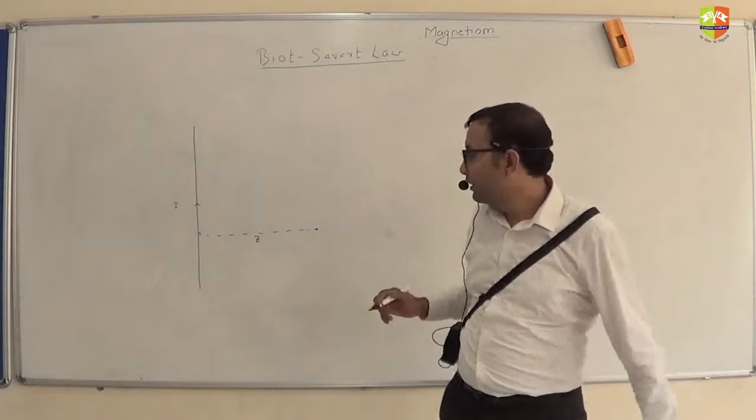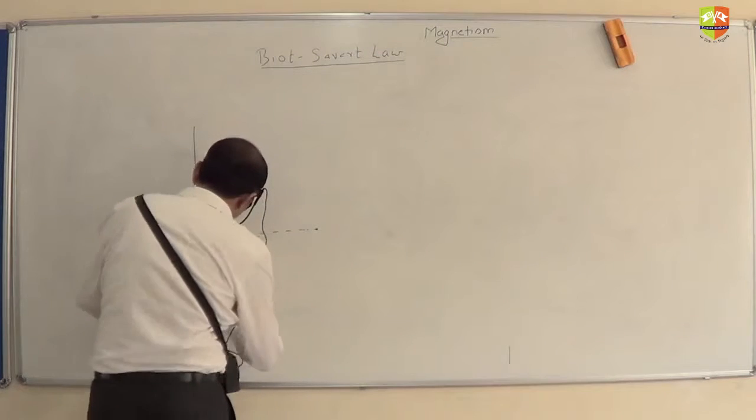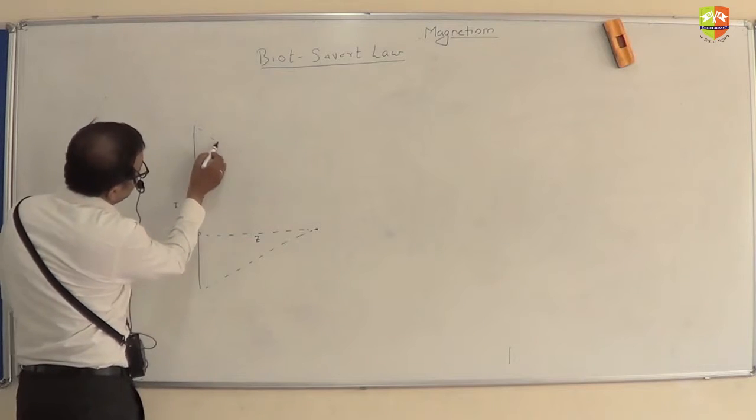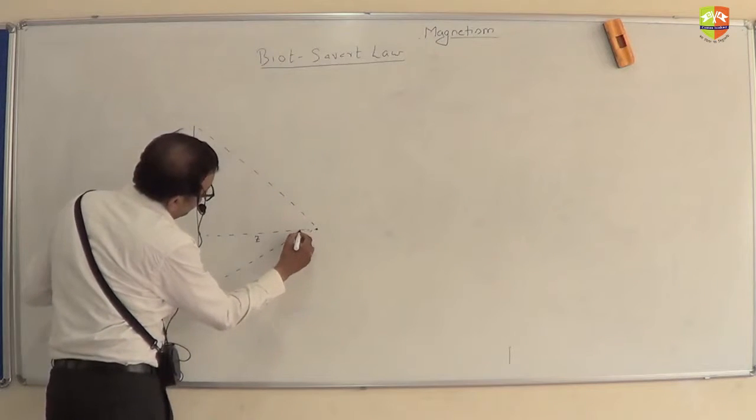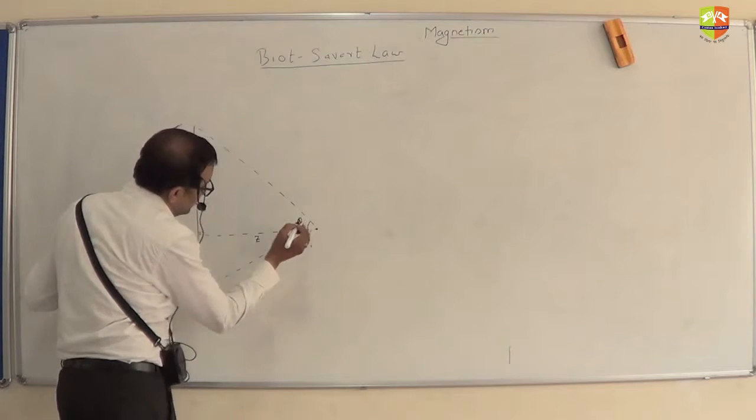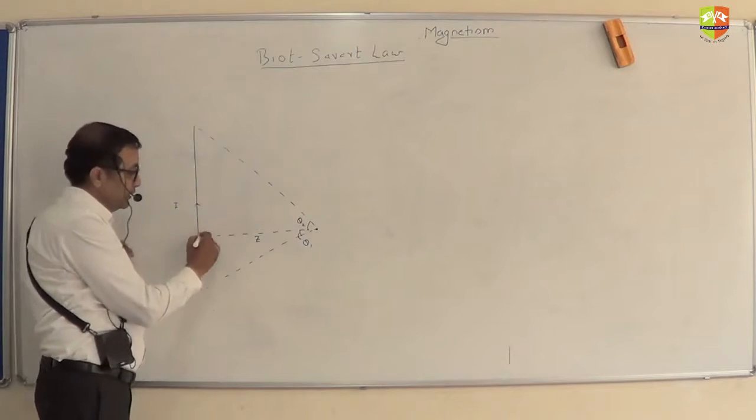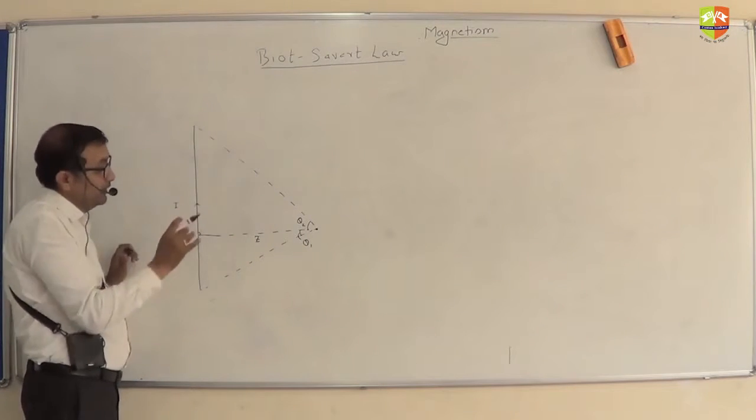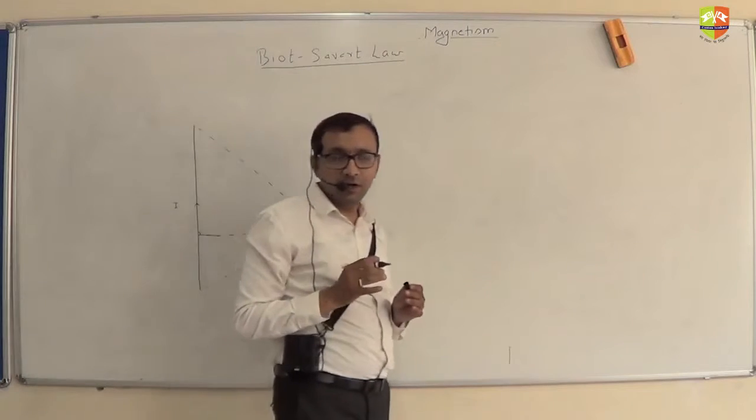The length of the wire is such that the two ends make angle theta1 here and theta2 here, like this. So with respect to this perpendicular distance, this point is making theta1 angle and that point is making theta2 here.